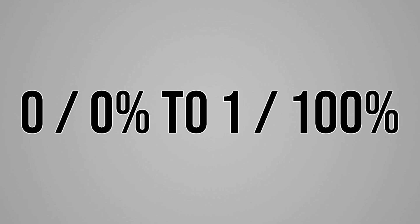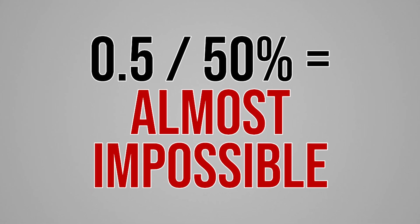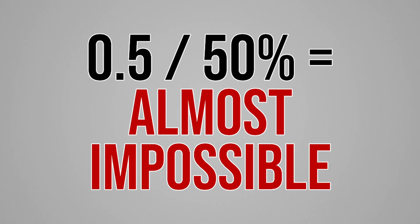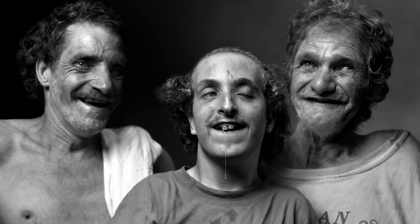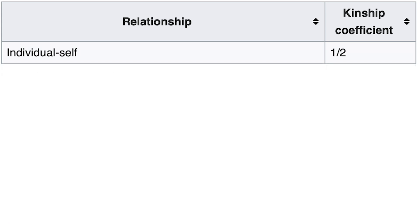The consanguinity coefficient is on a scale between zero — 0%, which is the least inbred — up to one, 100%, which is the most inbred. This is interesting since it's virtually impossible to have an inbreeding level of anything higher than 0.5, or 50%. In fact, there have been virtually no historical figures who have had this level of inbreeding or higher.